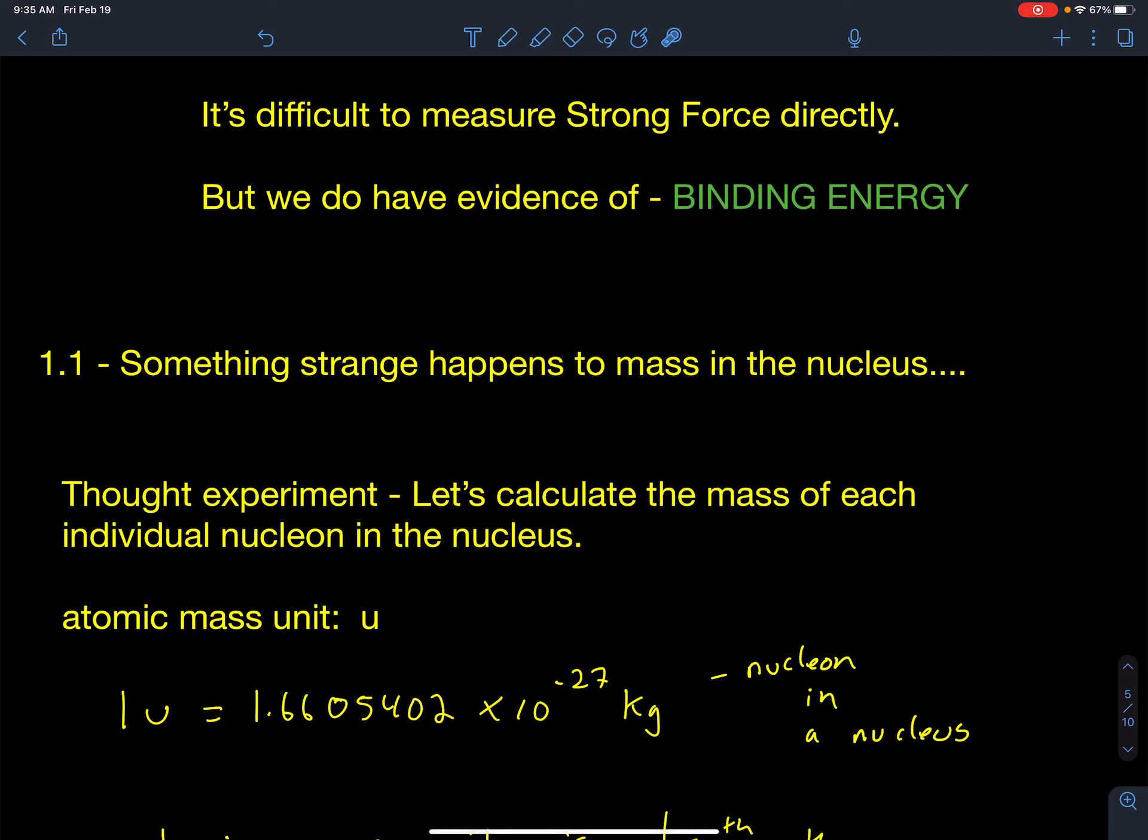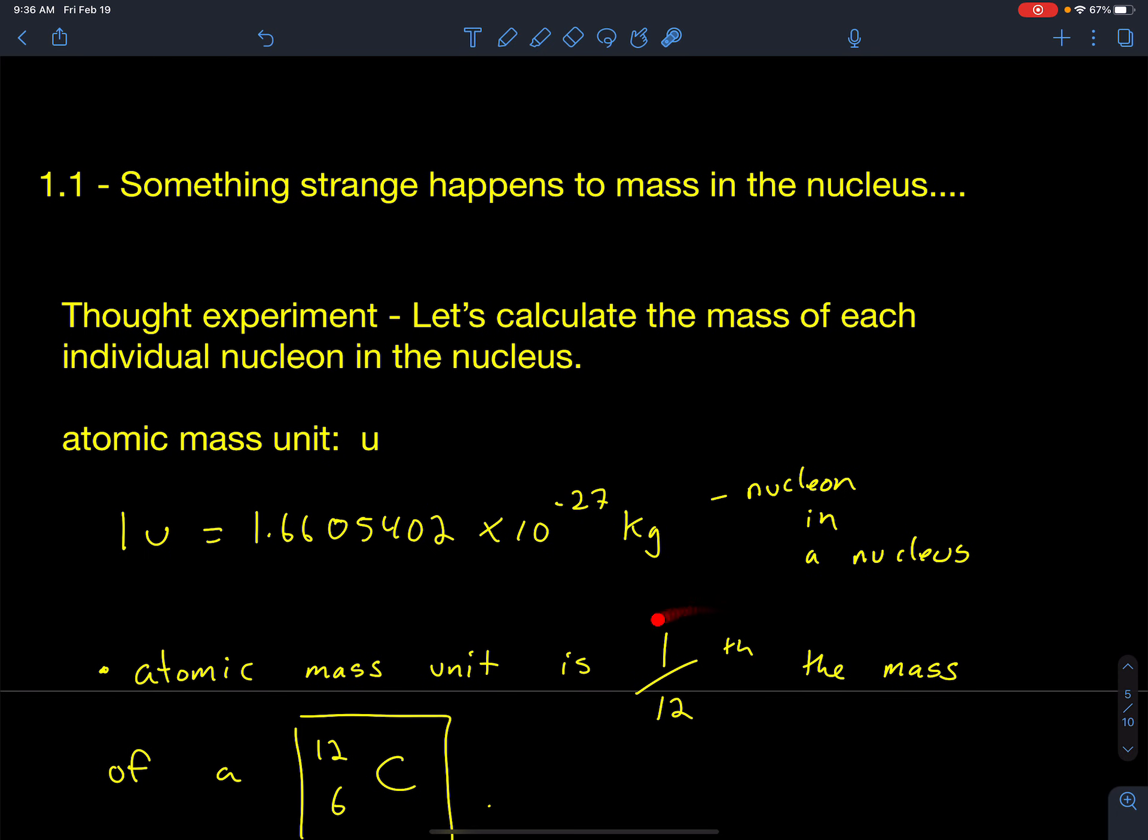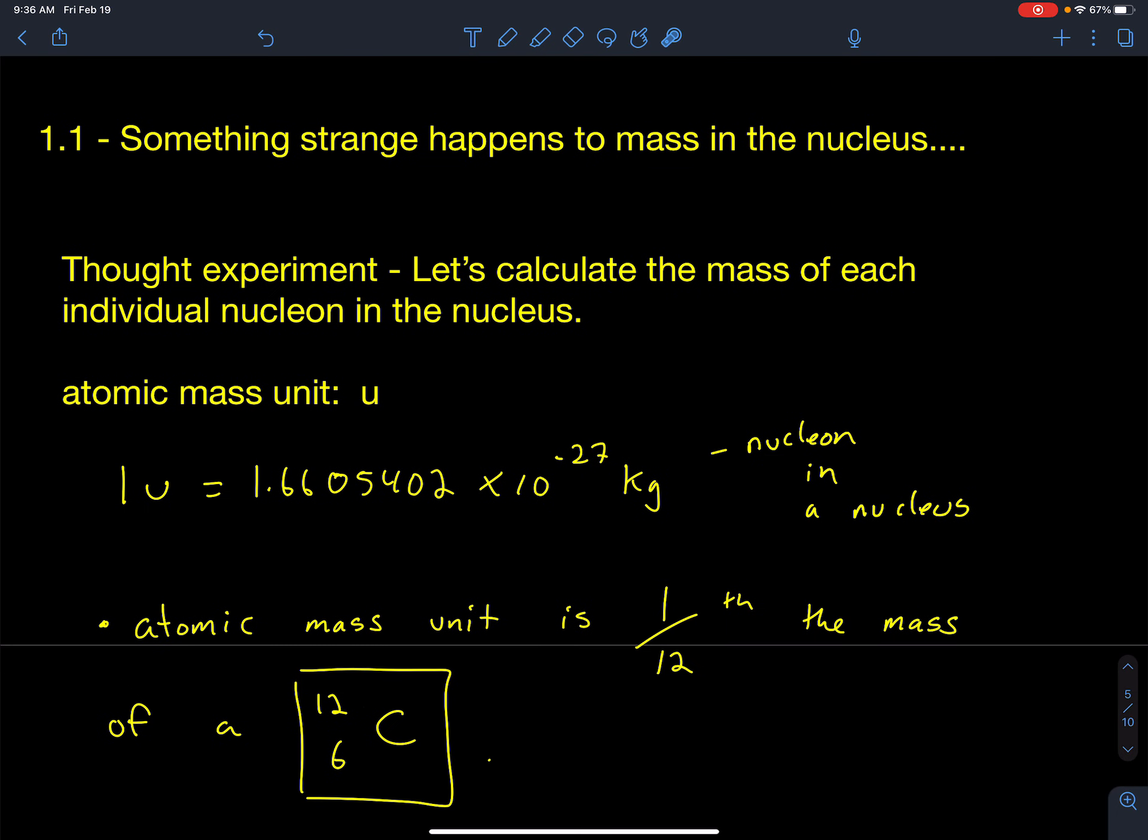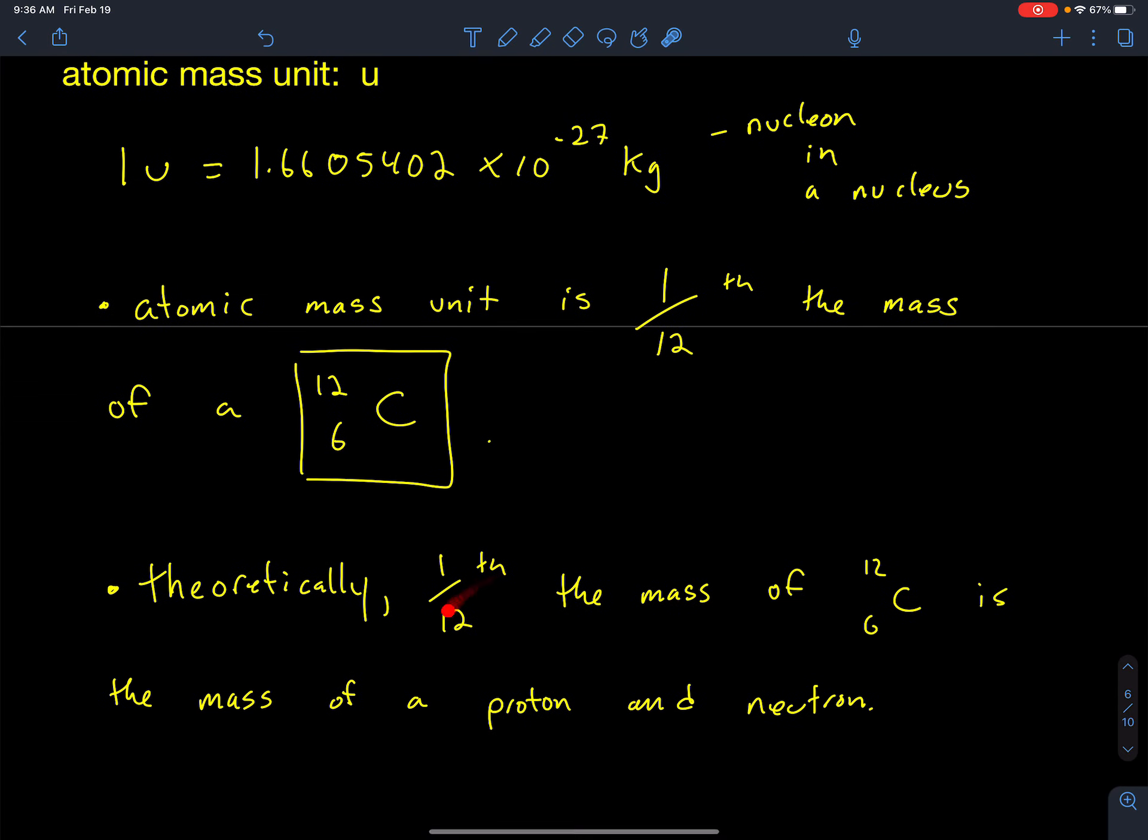And where that came from was the fact that everything on the periodic table is related to carbon-12. So all the atomic mass numbers, all these atomic mass units are a ratio of the mass of carbon-12, or better yet, one-twelfth the mass of carbon-12. Remember, carbon-12 has 12 nucleons. So if I just divide the mass of a carbon-12 atom by 12, I should get that. And that would be what everyone thought would be the mass of a proton and the mass of a neutron.